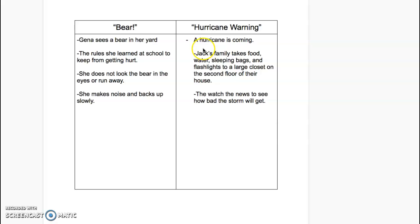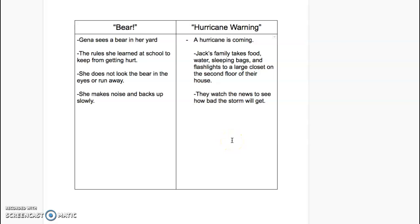For Hurricane Warning, a hurricane is coming. Jack's family takes food, water, sleeping bags, and flashlights to a large closet on the second floor of their house, and they watch the news to see how bad the storm will get. Those are examples of what these two families did to prepare for a problem that nature causes.